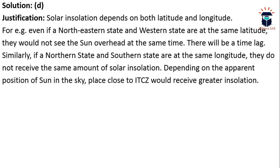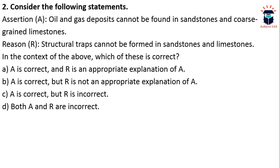In simple words, solar insolation depends on both longitude and latitude. Even if an eastern and western state are at the same latitude, they would not see the Sun overhead at the same time — there will be a time lag. Similarly, northern and southern states at the same longitude do not receive the same amount of solar insolation. Places close to the ITCZ receive greater insolation.